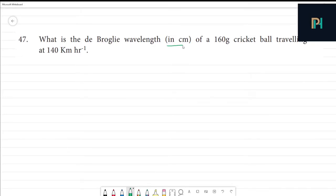Calculate the de Broglie wavelength in centimeter of a 160 gram cricket ball traveling at 140 kilometer per hour.